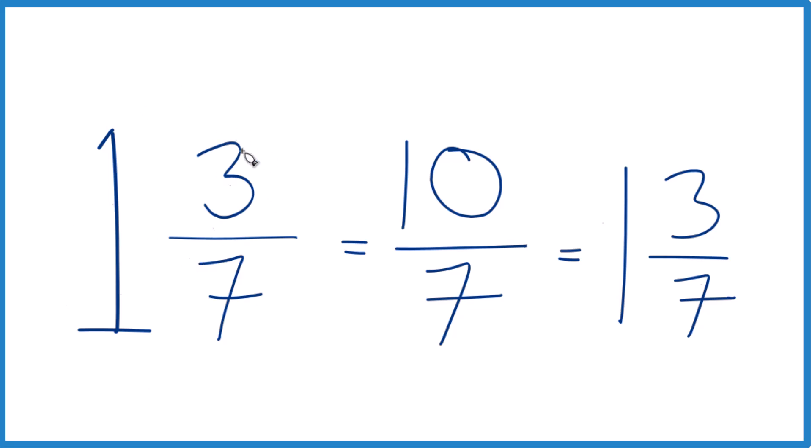And these numbers here, they're equivalent. They have the same value. It's just that we've written this here, 1 and 3 sevenths, as a mixed number, and 10 sevenths, that's an improper fraction.